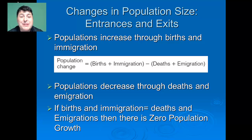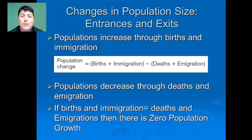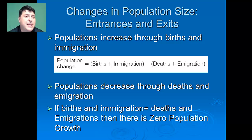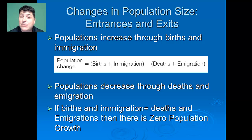In general, populations will increase as a result of births and immigration — those individuals that are born and those coming in increase the population. Populations decrease when organisms die or leave through emigration. A simple formula can be generated: population change equals births plus immigration minus deaths plus emigration. If births and immigration equal deaths and emigration, we're in a stable population with zero population growth, or ZPG.